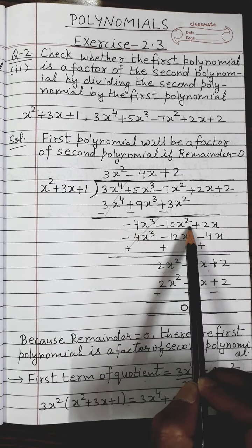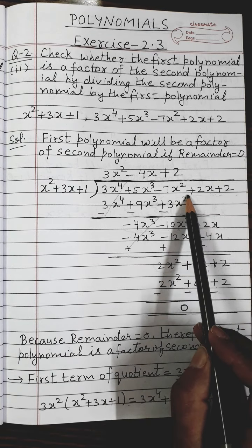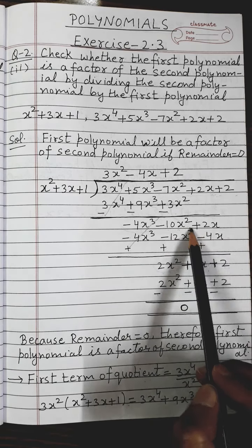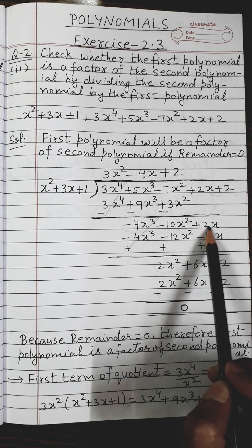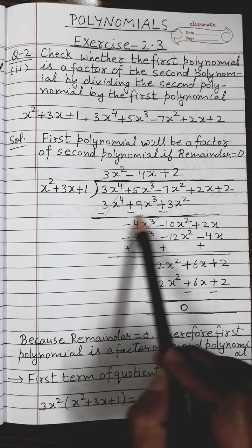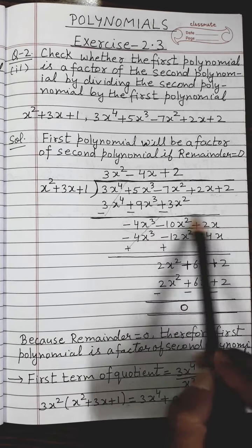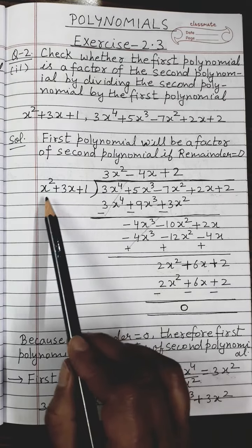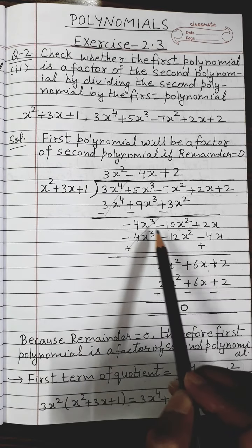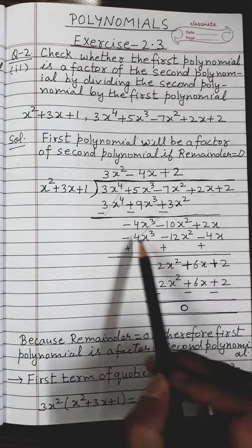Now I copy down the next term of the dividend, which is +2x, and write it here. This becomes the new dividend: -4x³ - 10x² + 2x. The divisor remains the same: x² + 3x + 1.